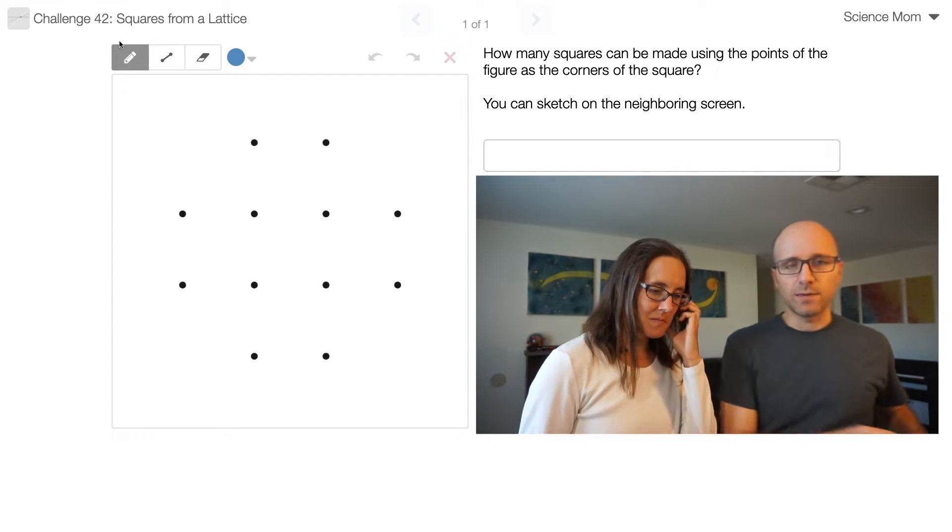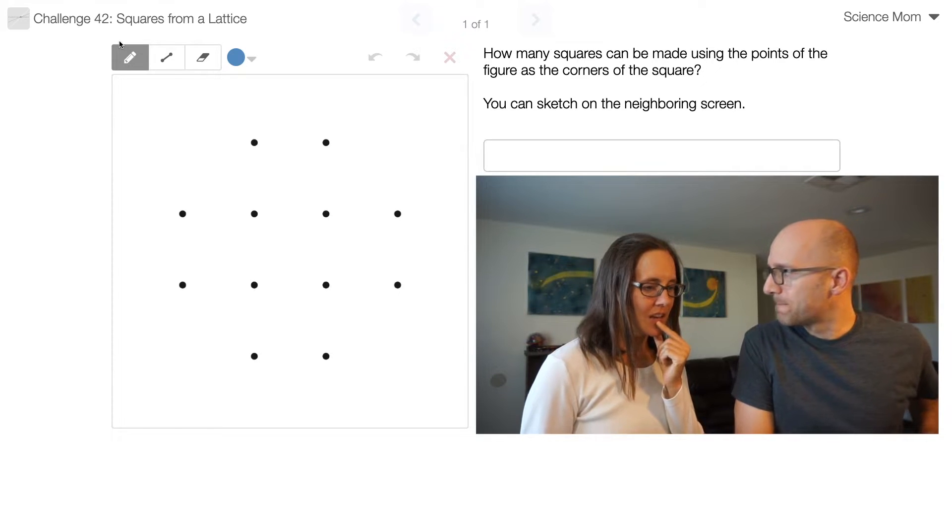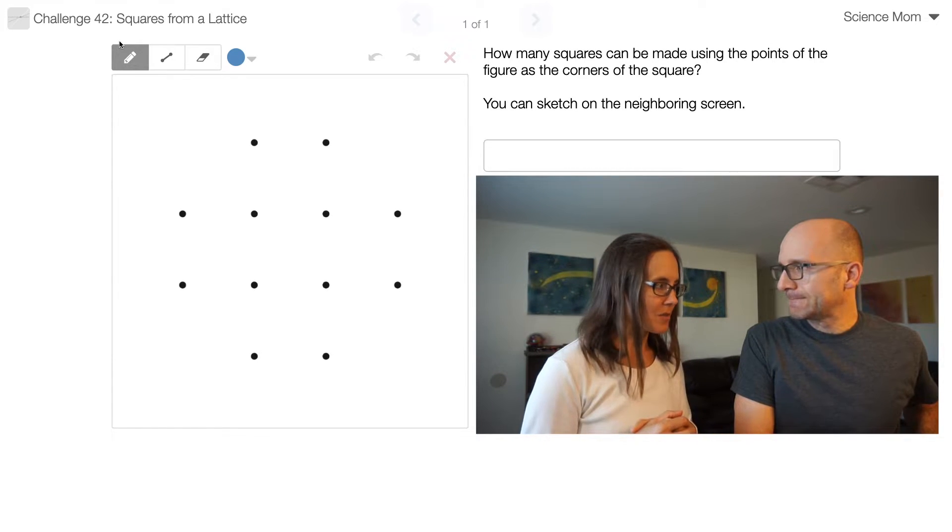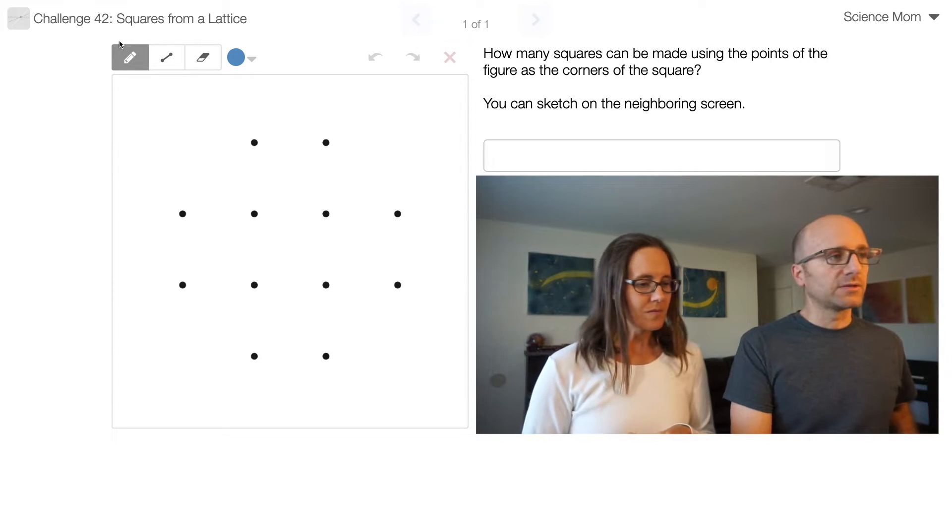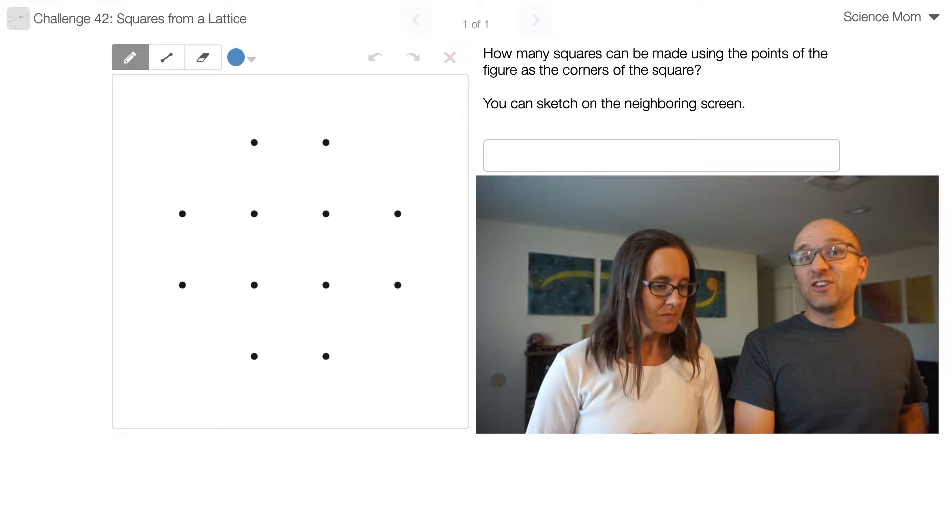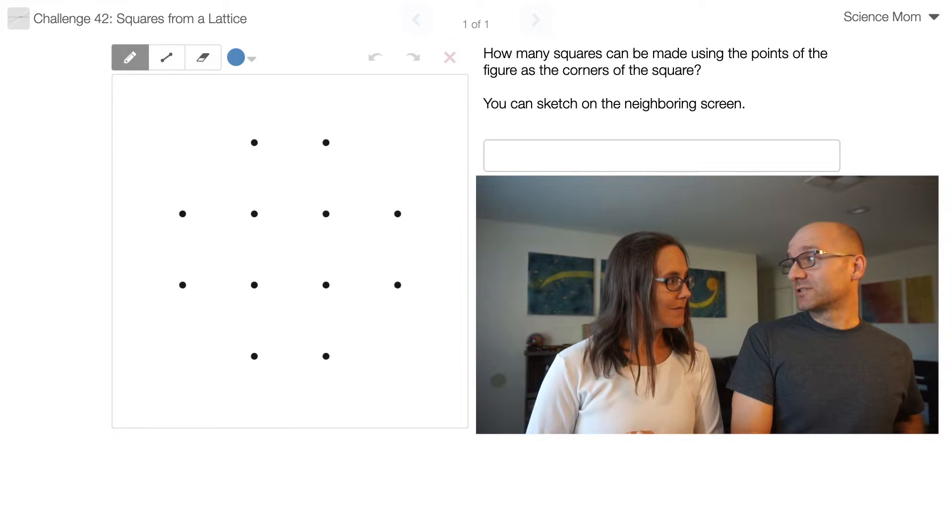It's got to be squares, all four sides the same length, right angles, all that. And they just have to have a point as their corner. Yeah. All four corner points have to be on those. And how many squares can I do? Okay. I think I understand.